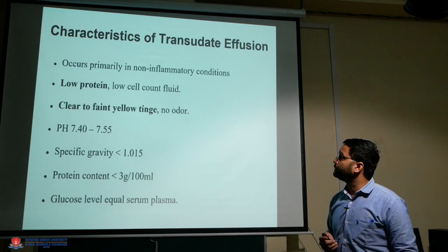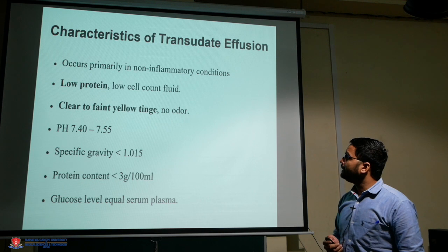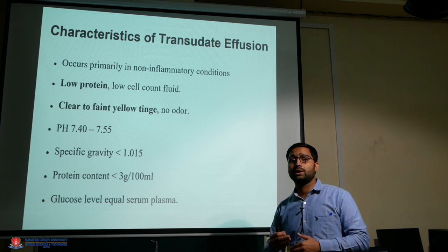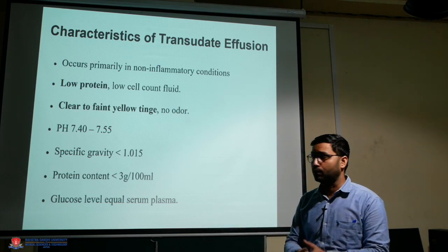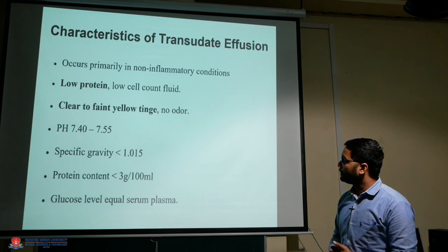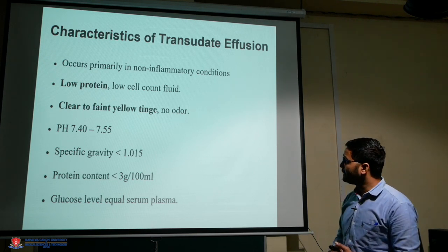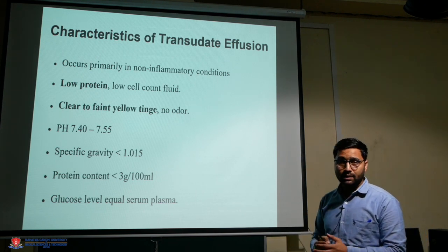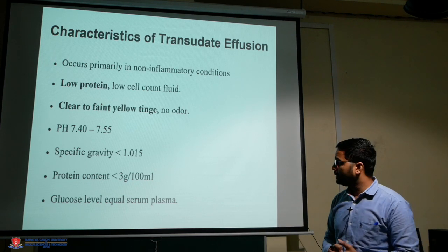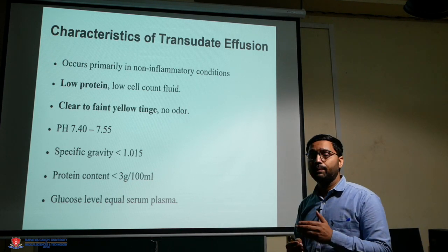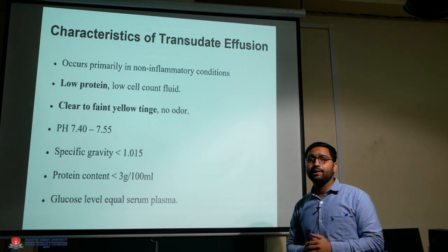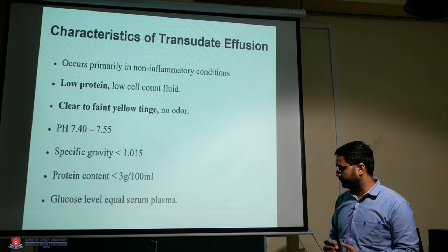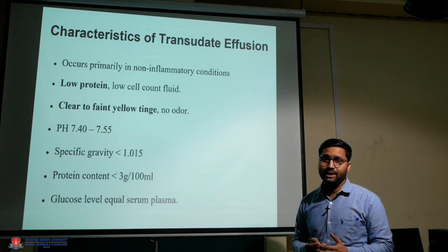The characteristics of transudate effusion: it occurs primarily in non-inflammatory conditions. It has low protein and low cell count. The fluid is clear to faint yellow in color with no odor. The pH is 7.40 to 7.55, specific gravity is below 1.015, protein content is below 3 grams per 100 ml per deciliter, and glucose level equals serum plasma level.